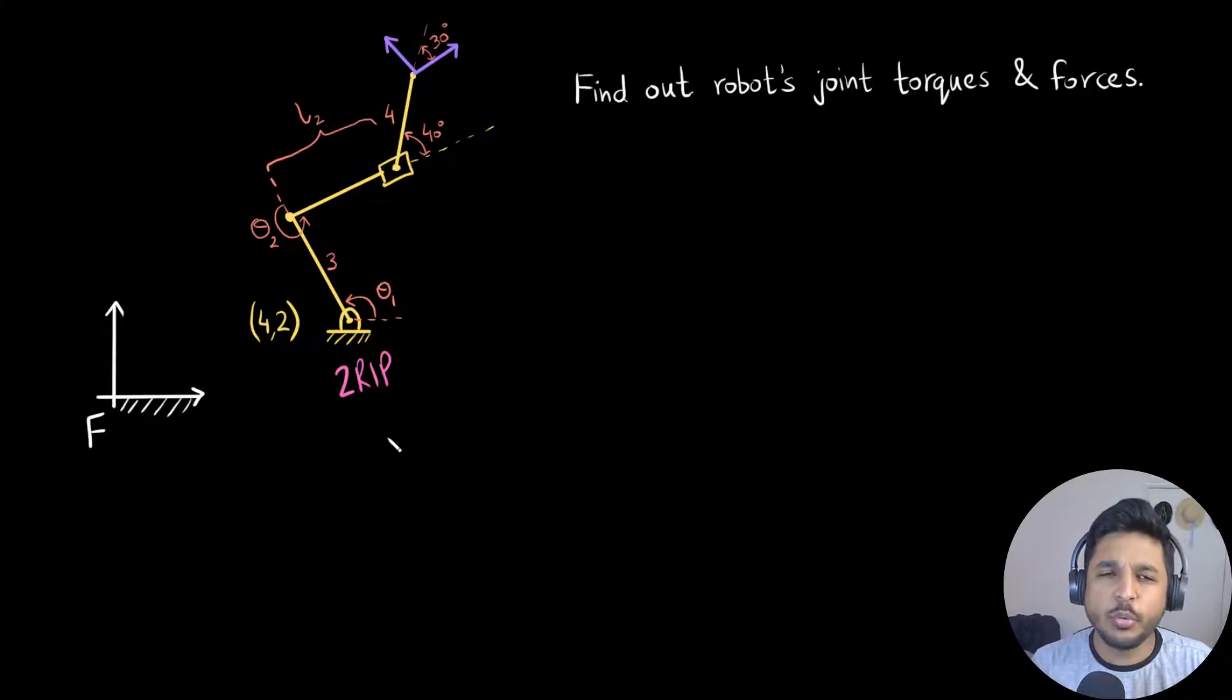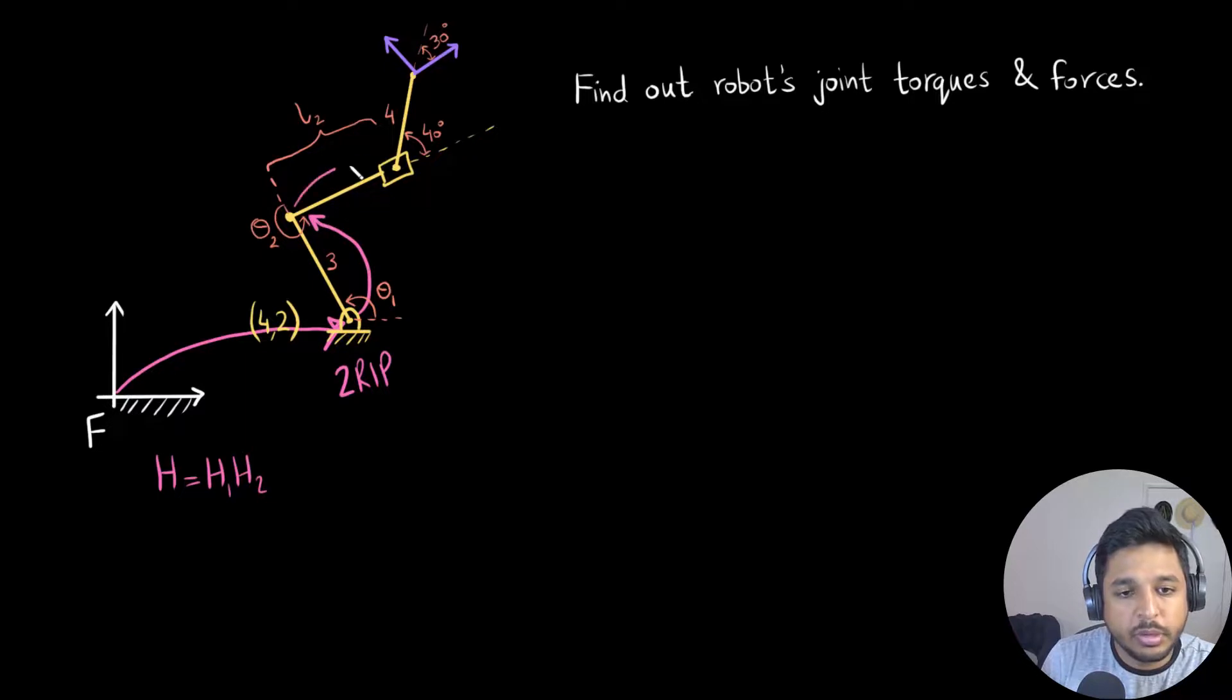So all we need to do is find the Jacobian of this robot. Just to give you a very quick recap of how to find the Jacobian: the way we go about it is we first find out the homogeneous transform that takes the fixed frame all the way to the end effector frame right here. If I were you, what I would do is write out the homogeneous transform as a bunch of different homogeneous transforms. So h1 would take the fixed frame to this point, h2 would take it to this point, h3 would take it to this point, and h4 would take it to this point.